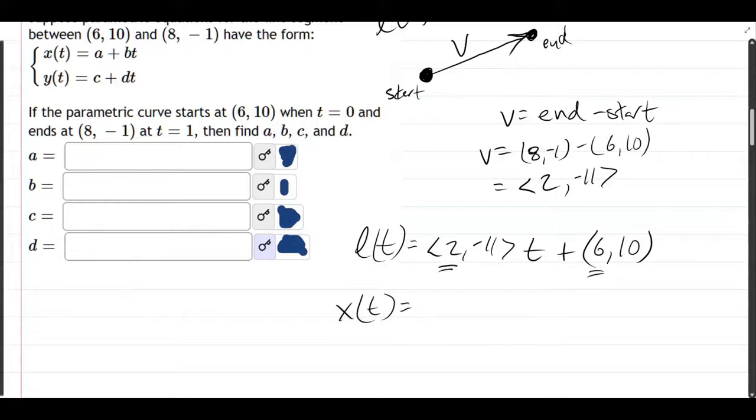So your x(t) is 2, remember, times t. Because, well, maybe it's better if I distribute, and then it'll be much more obvious. So distribute that t inside. You have 2 times t, comma, negative 11 times t, plus (6, 10).